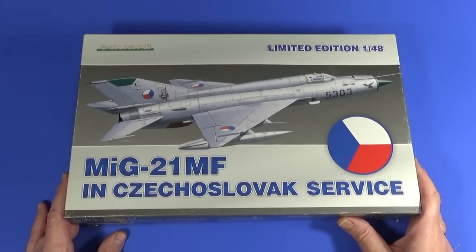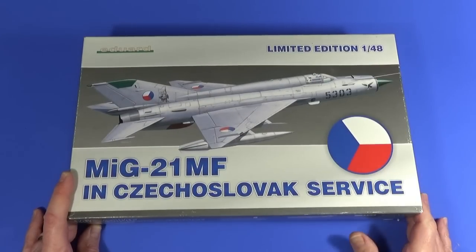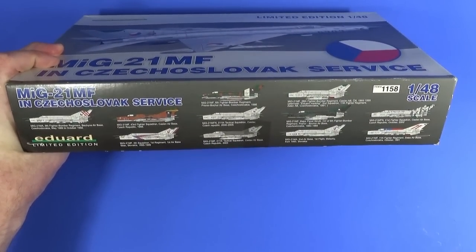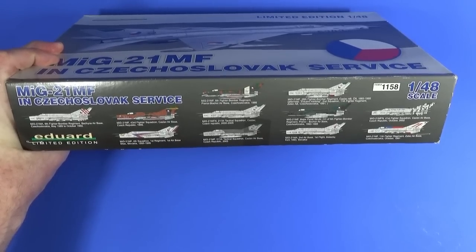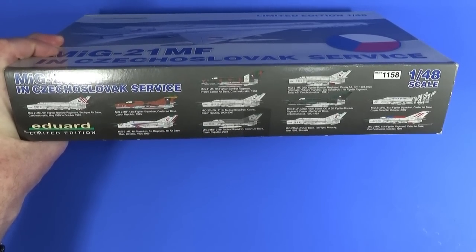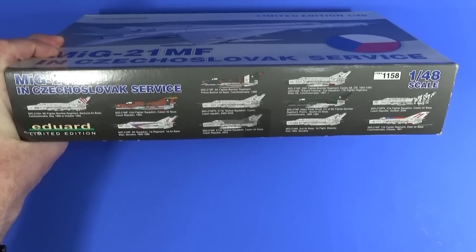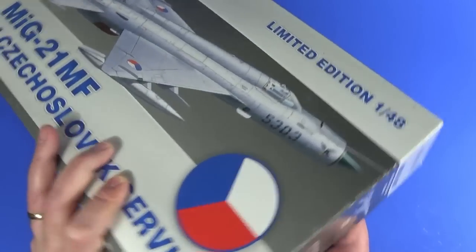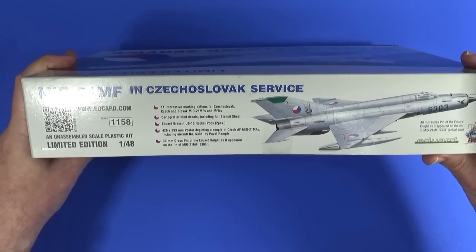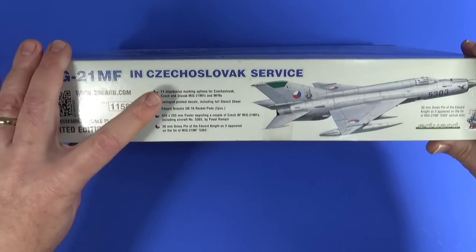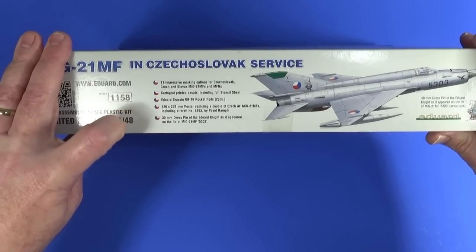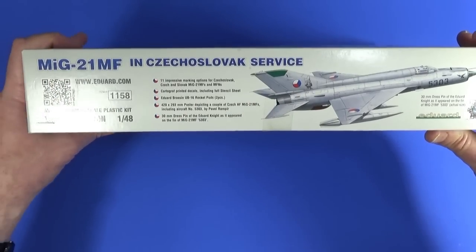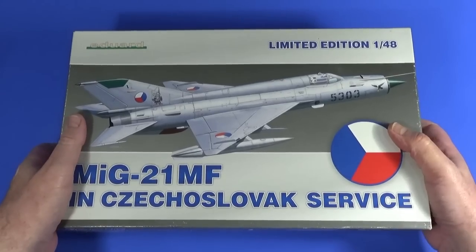So the kit comes in a pretty sturdy box, Czech service. On the side here are the 11 possible schemes that we can choose from. They're either from the Czech Republic, Slovakia or from Czechoslovakia, which of course they were before they became independent countries. Just a summary of the kit here. There are 11 impressive marking options, Cartograph decals, rocket pods, a poster and a pin of the Eduard Knight. So that's all inside, let's actually open up and have a look at the box.